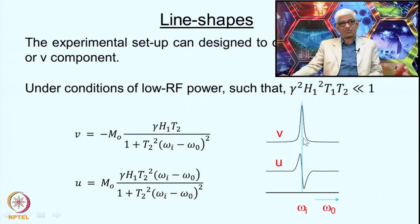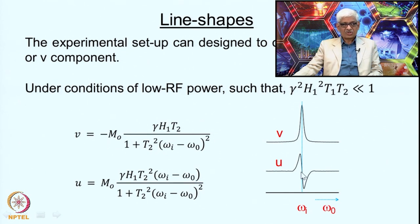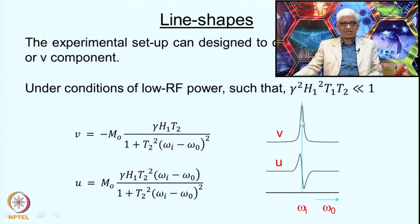Typically one uses the absorption line shape for drawing NMR spectra, but the dispersive line shape is also used for monitoring field drifts, especially for locking purposes. Dispersive line shapes are useful because it's easy to see deviation from the resonance condition — under resonance, this signal has the maximum and the dispersive signal is 0. The absorption line shape has a non-zero integral, whereas the integral of the dispersive line shape is 0.